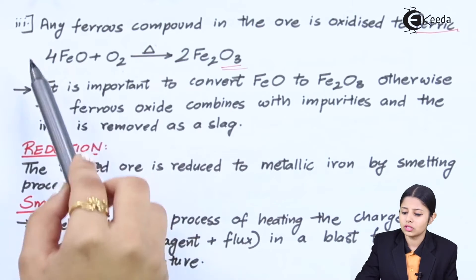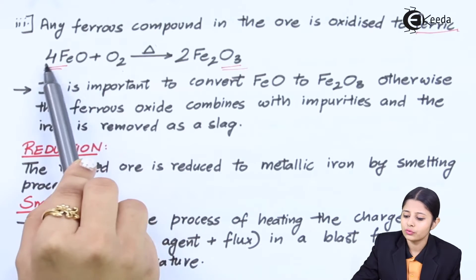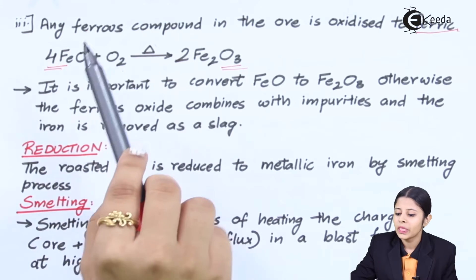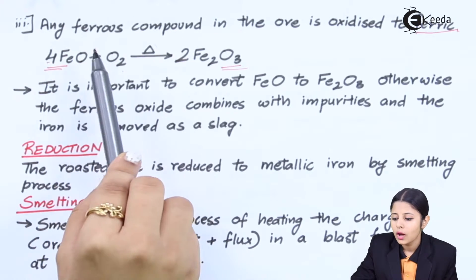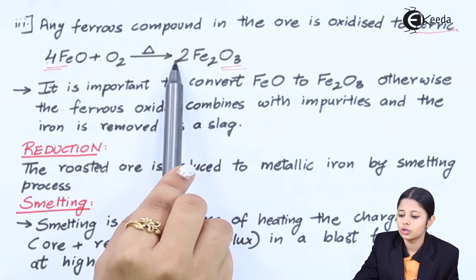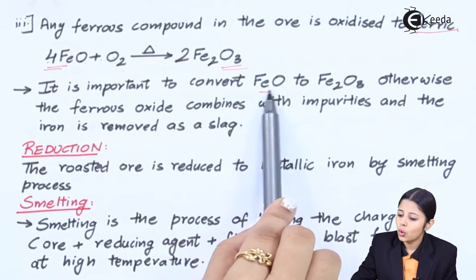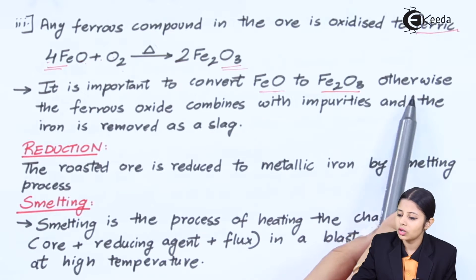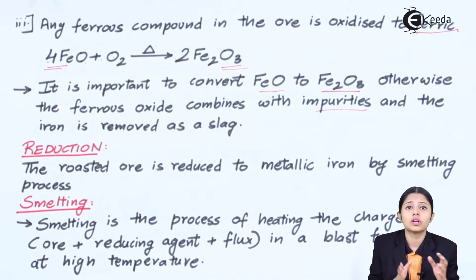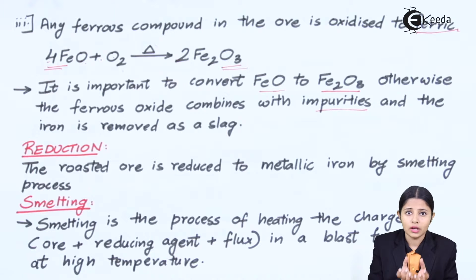Let us look at the balancing of this equation. We have 4 FeO — on the reactant side, Fe is 4. On the product side, 2Fe₂ means 2×2 = 4, so iron is balanced. For oxygen: reactant side has 4 O (from FeO) plus O₂, giving 4+2 = 6. Product side has O₃ × 2 = 6. So oxygen is also balanced. It is important to convert FeO (ferrous compound) to Fe₂O₃ (ferric compound), otherwise ferrous oxide combines with impurities and iron is removed as slag — and we do not want that. We want slag removed from iron so that finally we get pure iron, also known as pig iron.